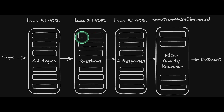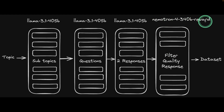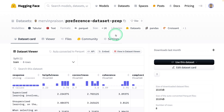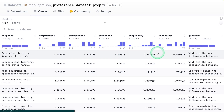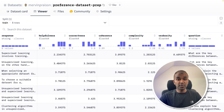Then we are going to create questions for each subtopic. After that, we are going to use LLaMA 3.1 to generate two responses. Finally, we are going to filter the quality of the responses using the Nemotron reward model — which is completely different from the normal Nemotron model. We'll then create a dataset and save it to Hugging Face, which can be used to fine-tune a large language model for instruction fine-tuning. That's exactly what we are going to see today. Let's get started.